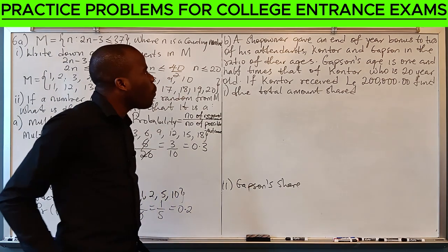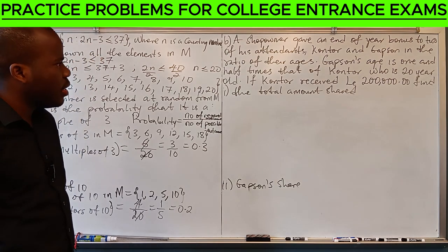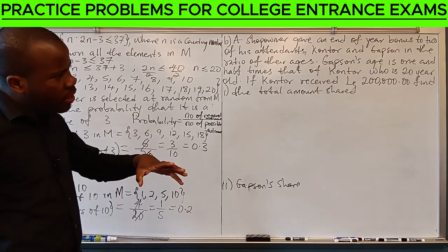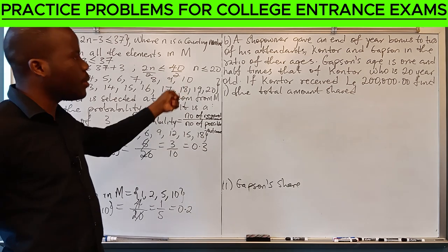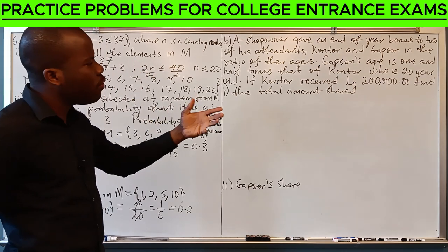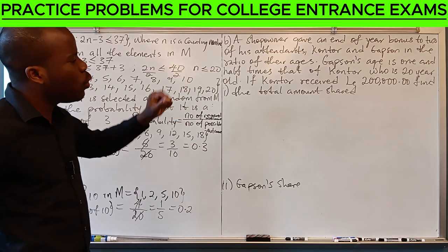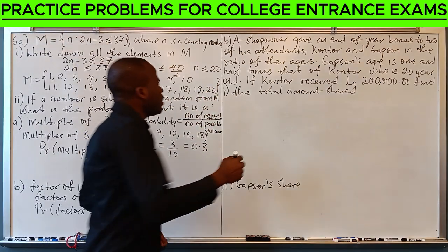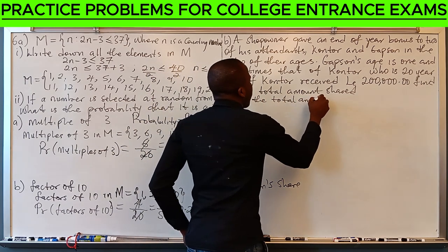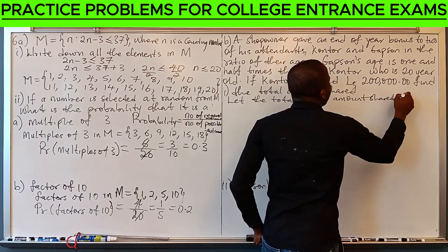Question B says, a shop owner gave an end-of-year bonus to two of his attendants, Cantor and Gapsen, in the ratio of their ages. Gapsen's age is one and a half times that of Cantor, who is 20 years old. If Cantor received 200,000 Egyptian pounds, find the total amount shared. Let the total amount shared be X.